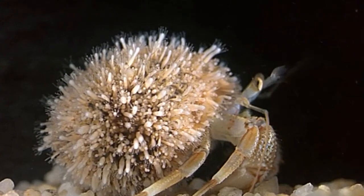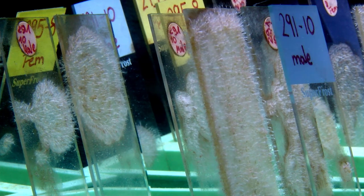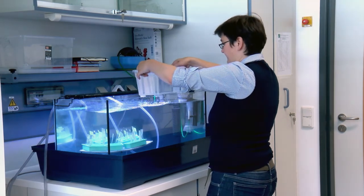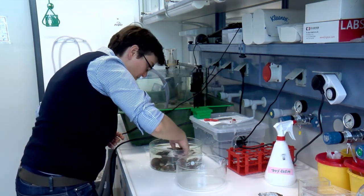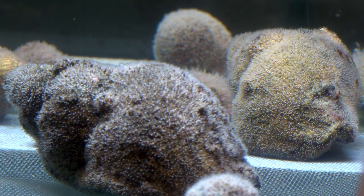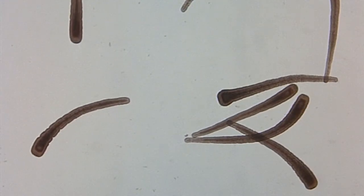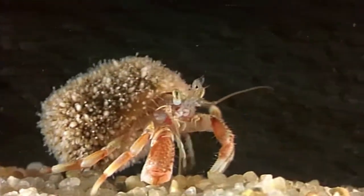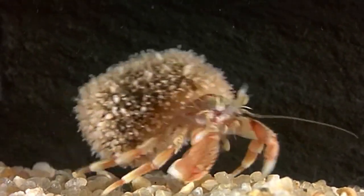Like corals, the hydroid polyp Hydractinia is a cnidarian. Like many other marine invertebrates, it passes through different stages in its life cycle. While adult and sexually mature organisms grow on certain snail shells and reproduce there, their fertilised eggs develop into swimming larvae that explore new habitats. Once a planular larva finds a suitable habitat, it changes into an adult polyp and the life cycle ends. However, if a suitable place is not found, most larvae starve to death within a few days.